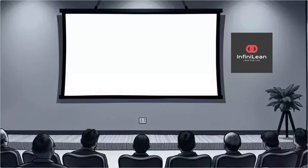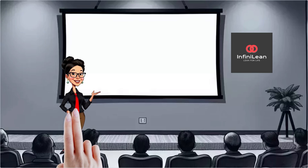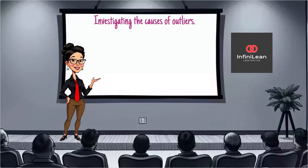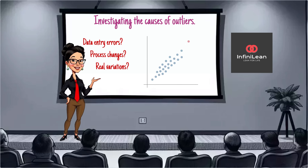Identifying outliers is just the first step. What should you do once you've found them? First, investigate the cause. Outliers can result from data entry errors, process changes, or real variations in your data set. Understanding the root cause will guide your decision on how to handle them.